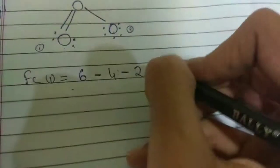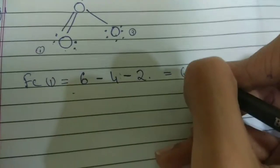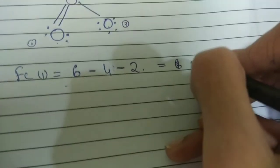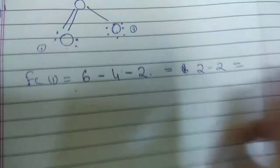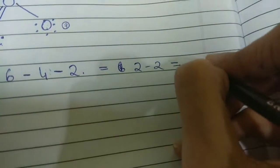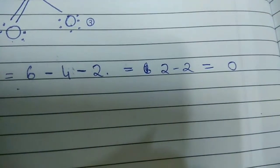Minus number of lines. So, this oxygen is linked to another oxygen via a double bond. So, we write 2 bonds, 2 lines, 2 bonds. So, we write 6 minus 4 minus 2 which becomes 2 minus 2 which is equal to 0. So, the formal charge in the first oxygen atom is 0.